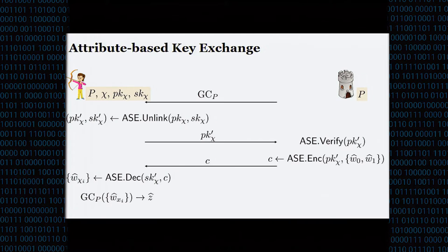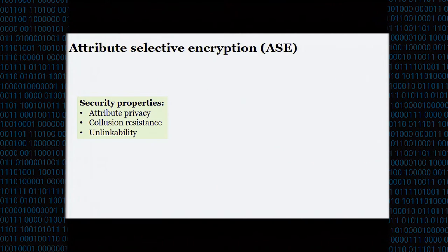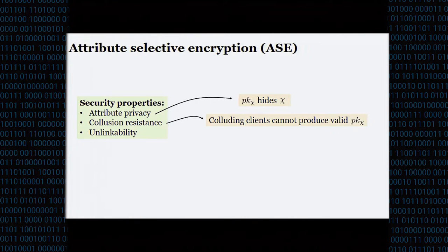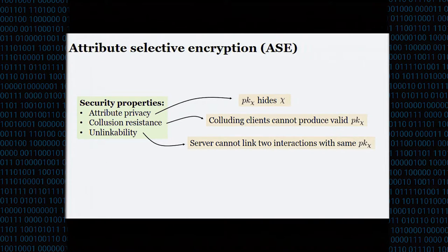We also need security properties for attribute-selective encryption to achieve our goals. We want attribute privacy — the public key should hide anything about the attributes it's tied to. Collusion resistance means that two clients should not be able to produce a valid public key for some attribute vector that they don't have. And unlinkability says that the server should not be able to link any two interactions with the same public key.